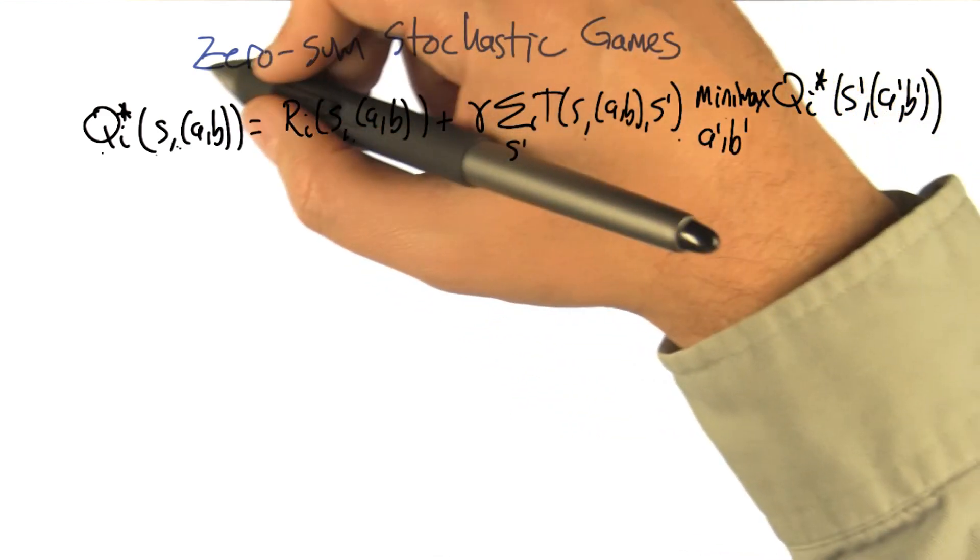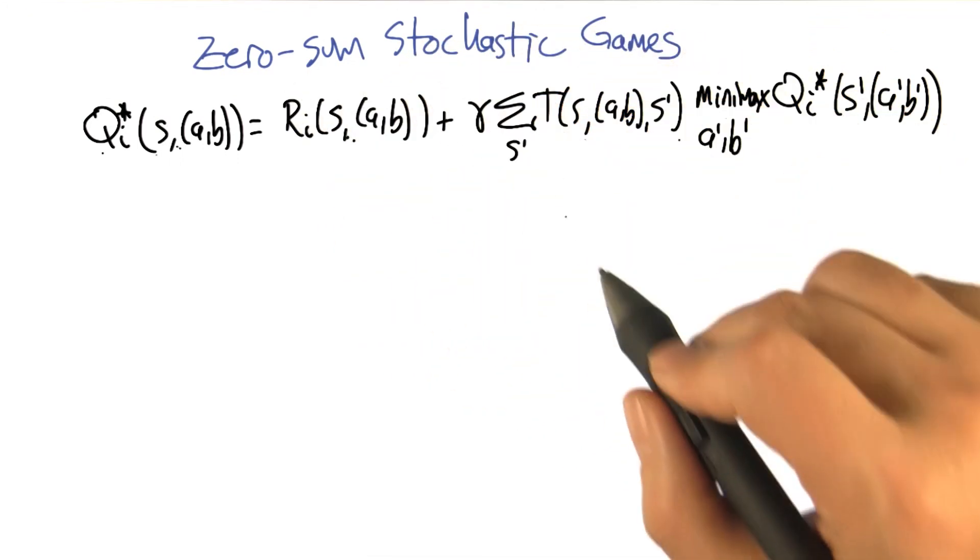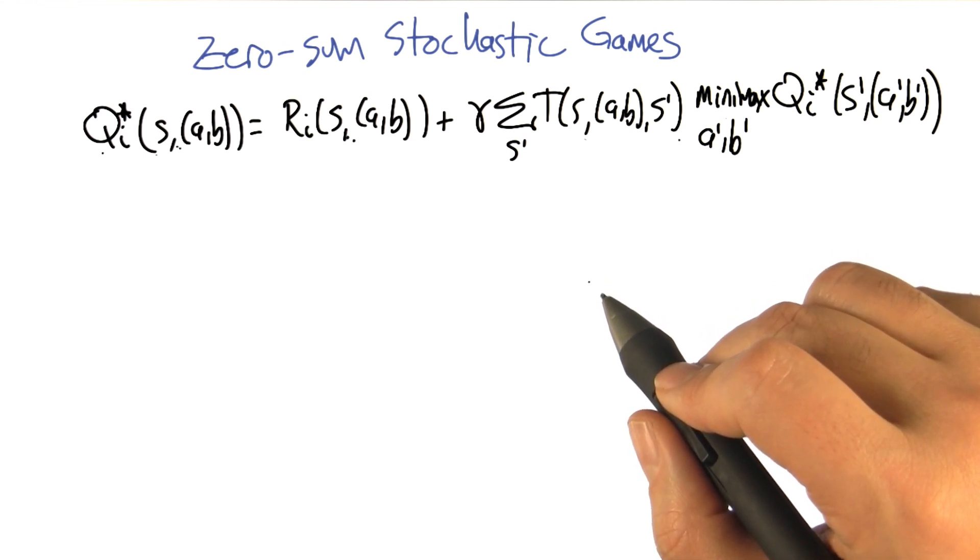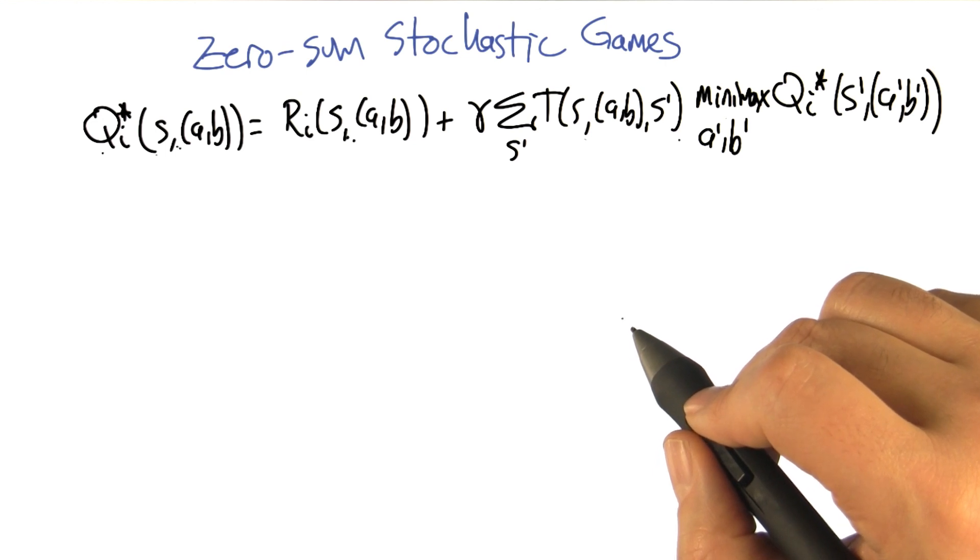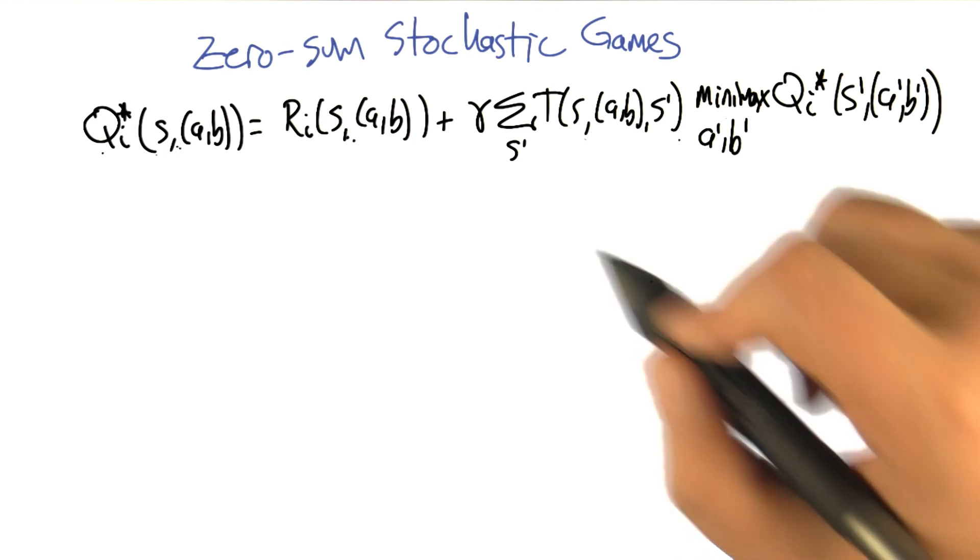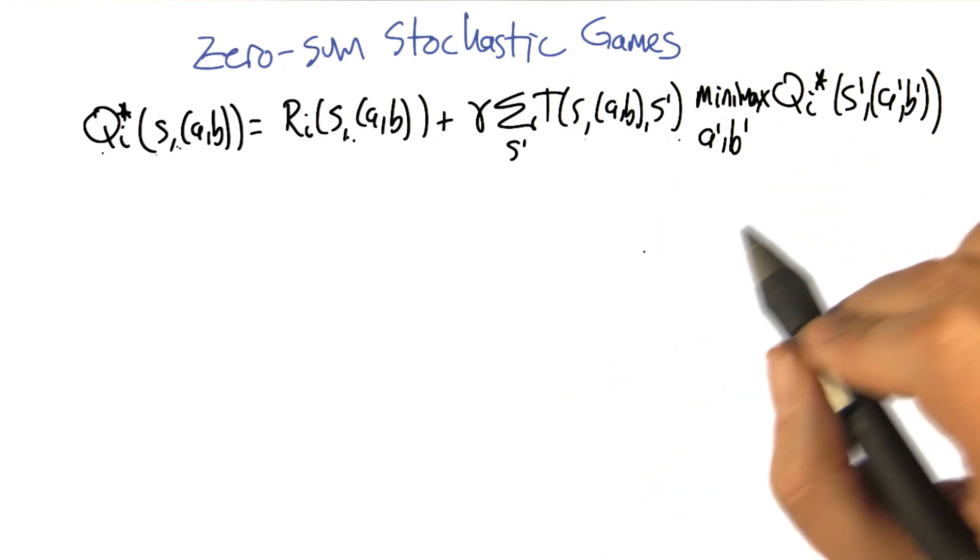It turns out that when you're talking about zero sum, it really implies that there's only two players. Because if you have a zero sum three player game, it really is just a general sum game. You can imagine that the third player is just an extra factor that's just messing with the numbers to make things sum up to zero. So zero sum really does kind of focus on this two player setting. That makes sense.